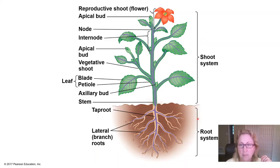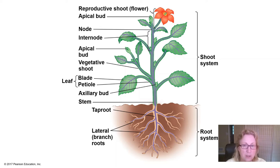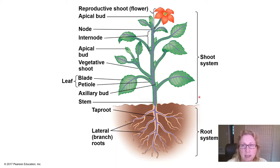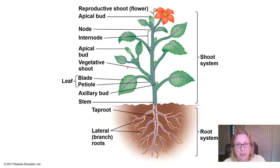Here's our basic plant. We're talking about vascular plants — the non-vascular plants don't have true roots or leaves and don't have vascular tissue. Leaves are made up of two parts: the blade and the petiole, which is sort of the stem of the leaf. Plants have shoots above ground and roots below ground. A flower is just a reproductive shoot, the growing parts of plants are buds, and vascular tissue goes throughout.